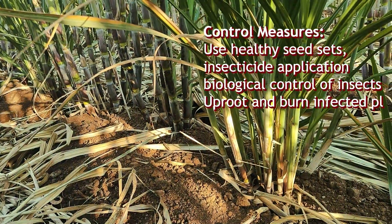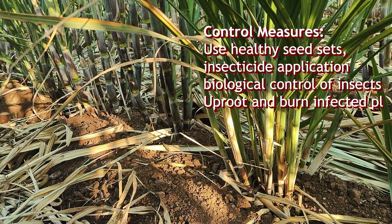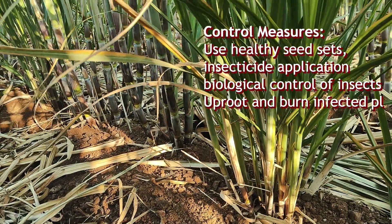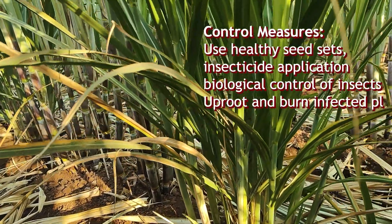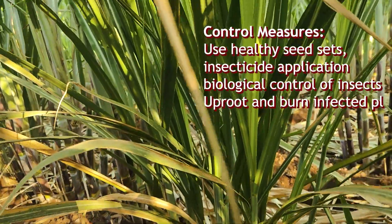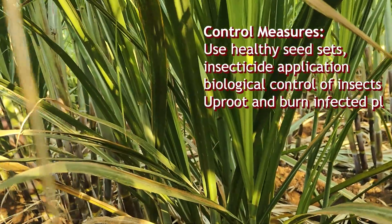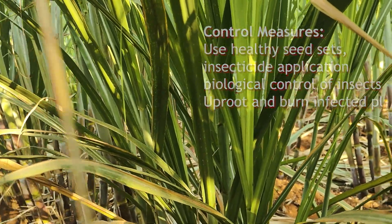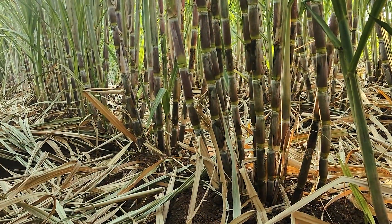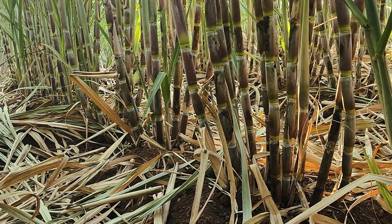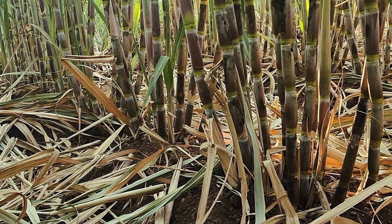Once the plant is infected, it is very difficult to recover it. So regularly inspect the fields and remove the infected plants to prevent the disease spread. Use resistant varieties of sugarcane.